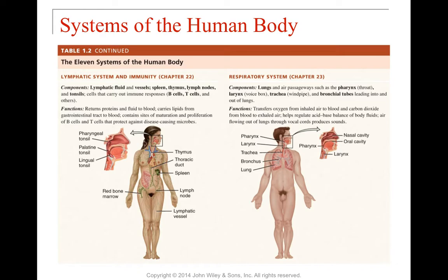The respiratory system starts with air passages coming through the mouth — the pharynx, larynx — then down through the trachea and bronchial tubes into the lungs. Its function is gas exchange: bringing in oxygen from inhaled air into the blood and exporting carbon dioxide from the blood into exhaled air. It also works with the circulatory system in regulating acid-base balance, and is involved in talking — air from the lungs crosses the vocal cords in the larynx to produce sound.